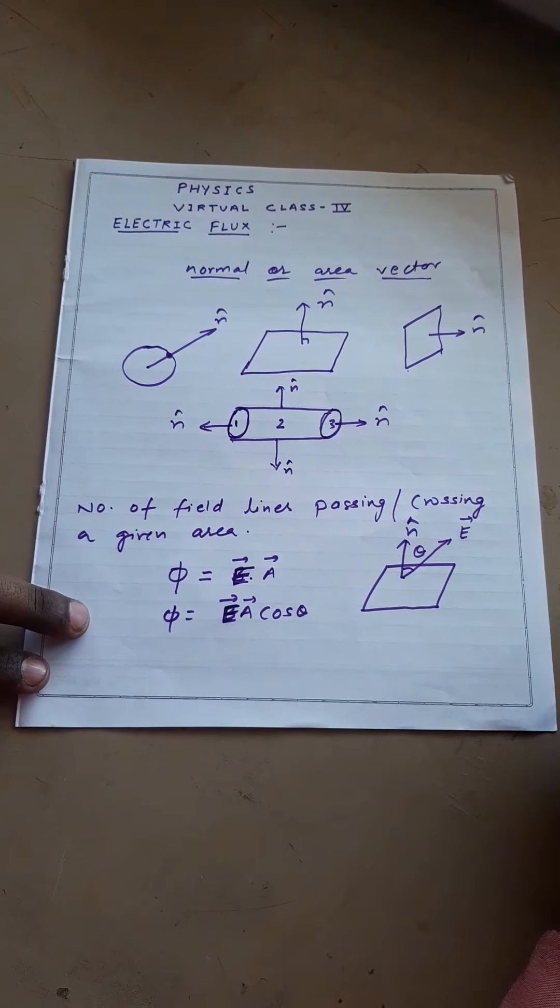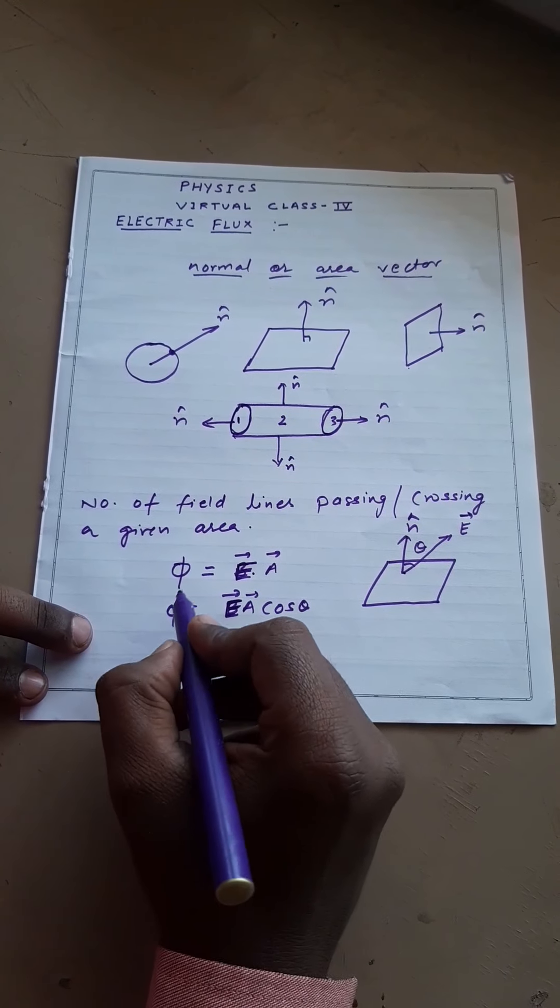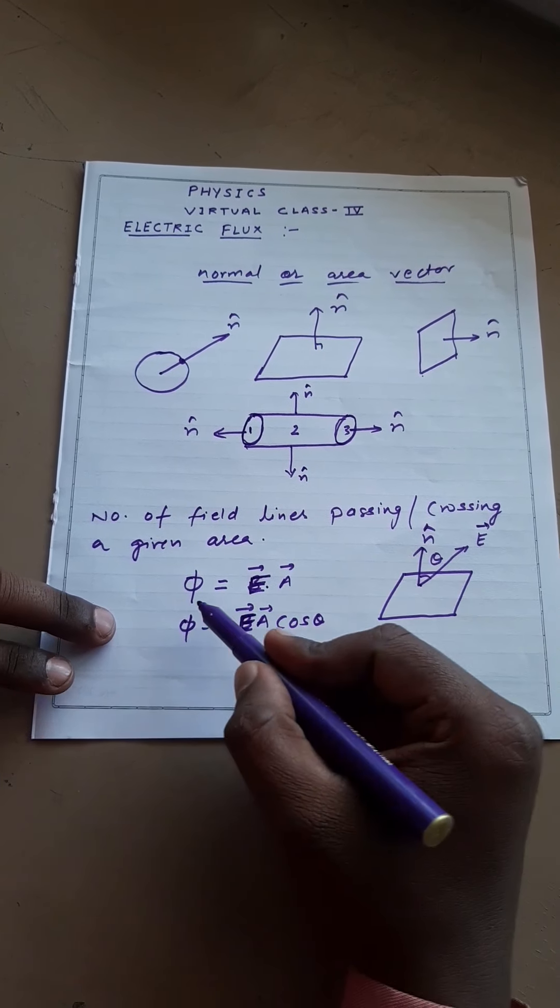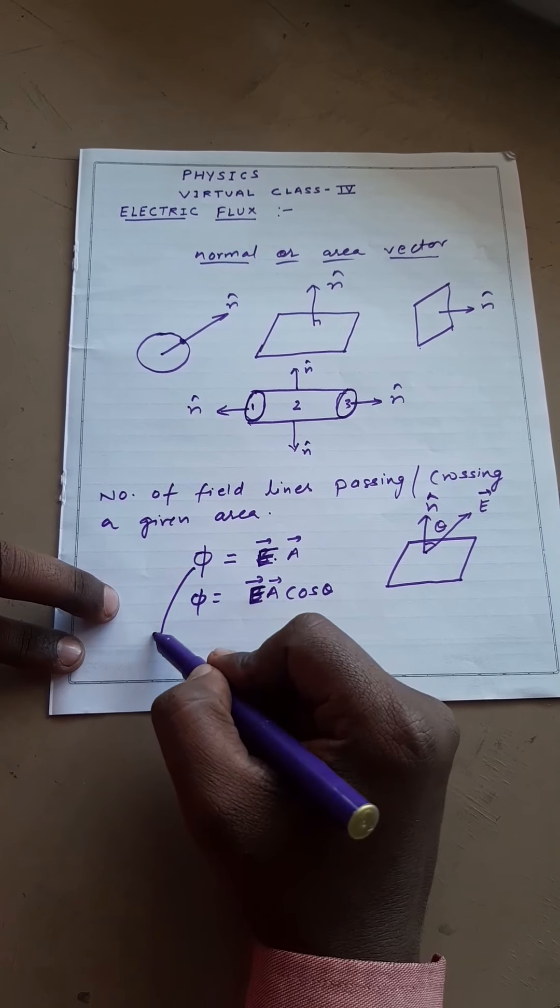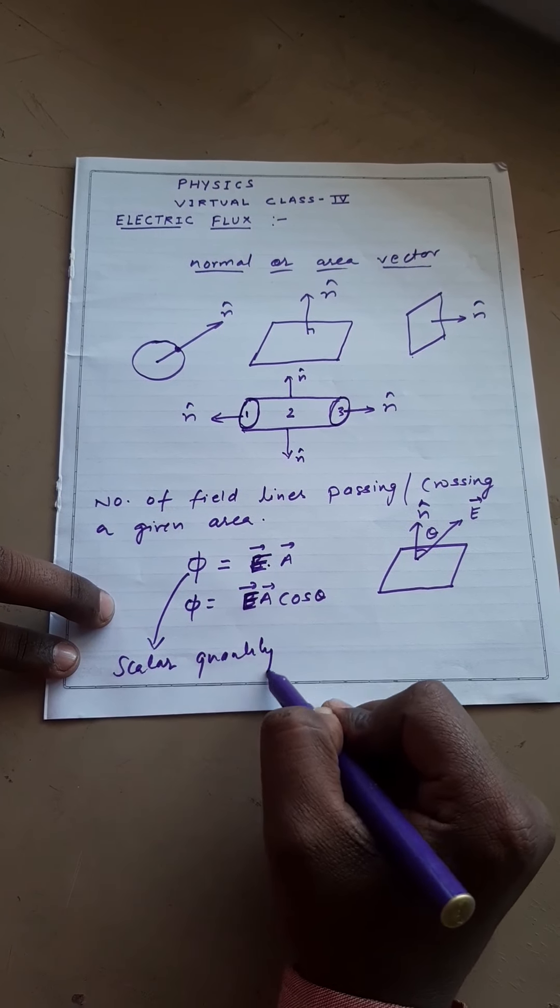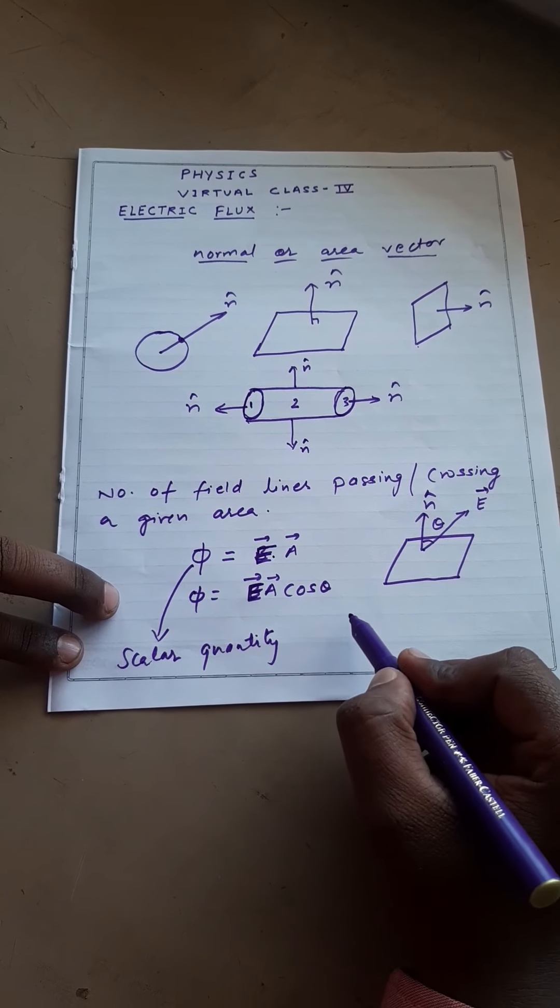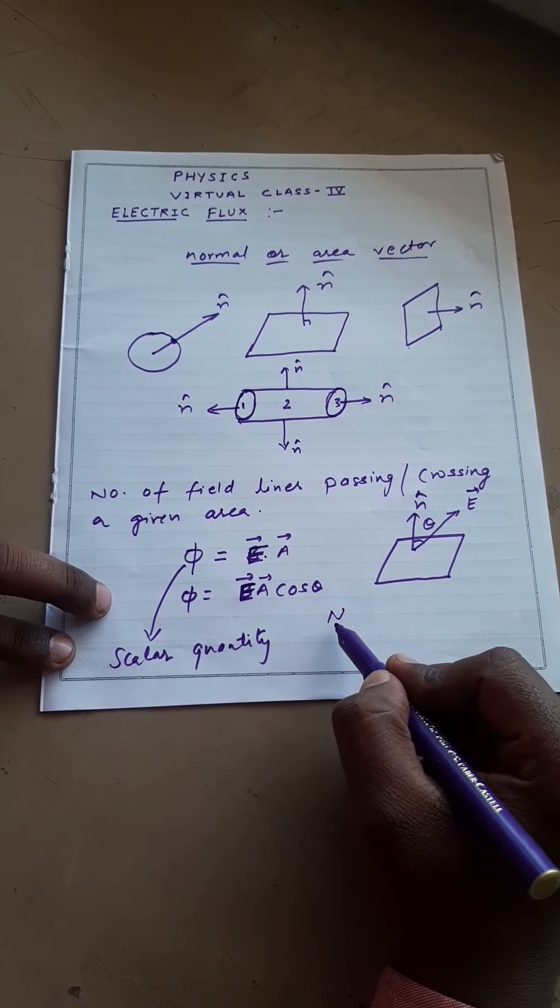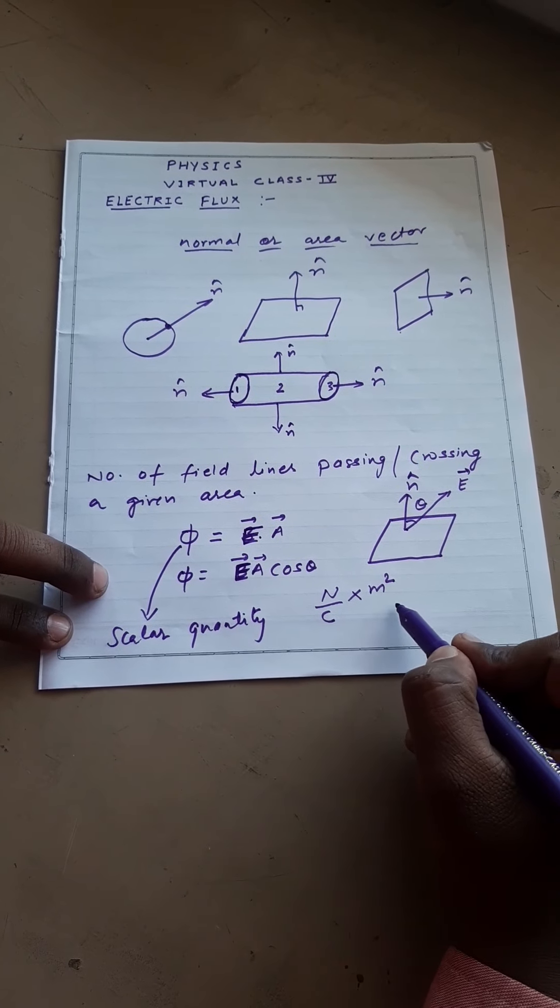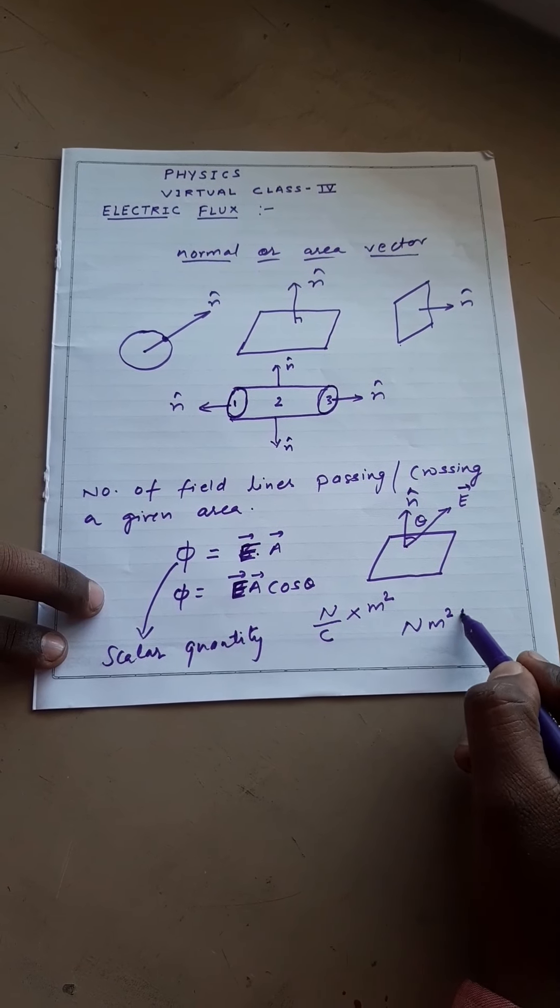So the angle made between normal vector and electric field vector is θ. So from this we can conclude that dot product of E and normal vector is equal to the electric flux which is a scalar quantity. And unit of this is electric field Newton per coulomb multiplied by area. So unit of flux is Newton meter square per coulomb.